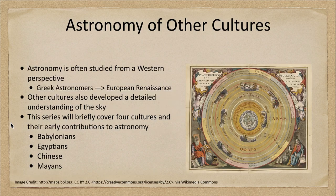In general, astronomy is studied from a Western perspective. We talk about the Greek astronomers and we jump into the Renaissance. We sometimes talk about some of the early things like Stonehenge. But we don't always look in as much detail at some of the other cultures that have developed a significant astronomy as well. So that's what we're going to look at here — we're going to start looking at some of these other cultures.